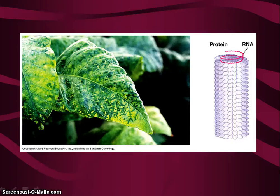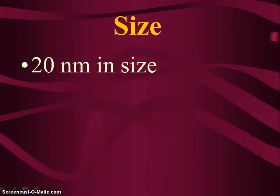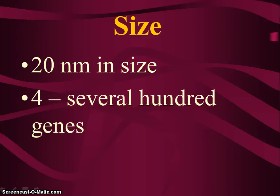Viruses are very small, about 20 nanometers in size — smaller than a ribosome. Millions can easily fit on a pinhead and it is smaller than the tiniest bacteria; you need an electron microscope to see them. A virus can contain between four to several hundred genes, though many viruses have fewer than ten genes.